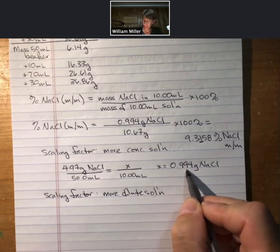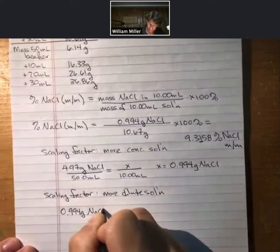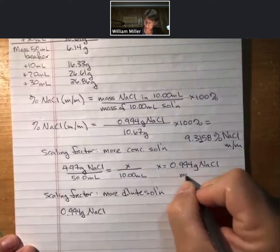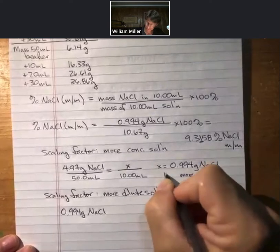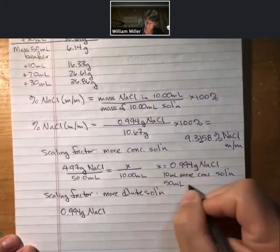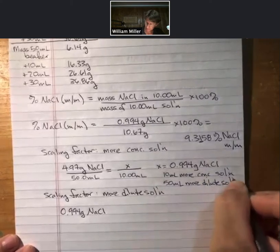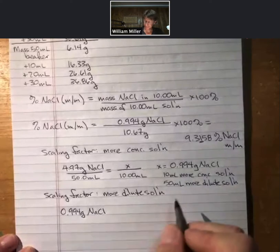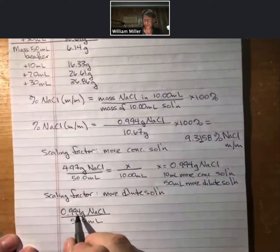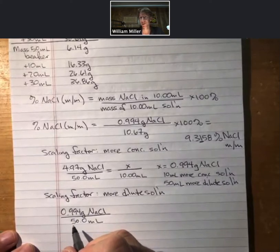So, we have 0.994 grams from our first, this was in 10 milliliters of our more concentrated solution. So, 10 milliliters of our more concentrated solution. It was also in 50 milliliters of our more dilute solution. So, now when I put this over 50 milliliters, it's because there was only 10 milliliters from before. I know it's a little confusing. Hopefully it makes sense. Ask your instructor questions.